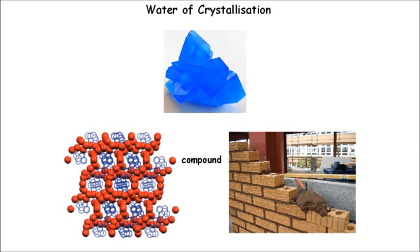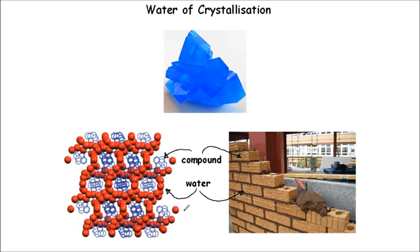It's sort of like bricks and mortar, because they have similar ways in which they work. If we consider that the compound — the blue blobs — are like the bricks in a wall, then the water of crystallization, the red bits, is like the mortar between those bricks. It's the stuff that keeps it in that regular pattern. So the water of crystallization is not part of the compound but is part of the crystalline structure — like mortar surrounds bricks in a brick wall to help give it its shape.